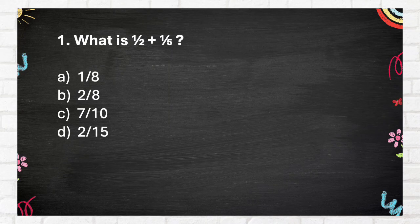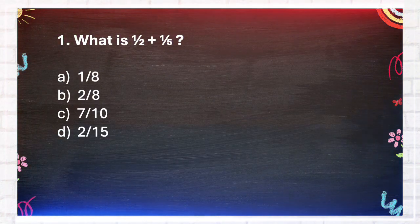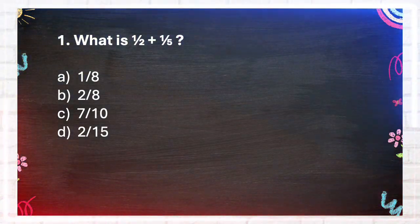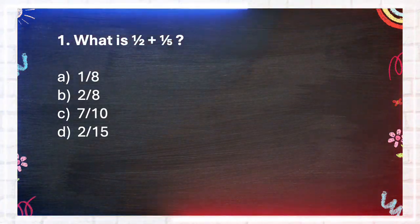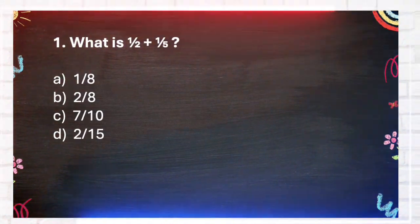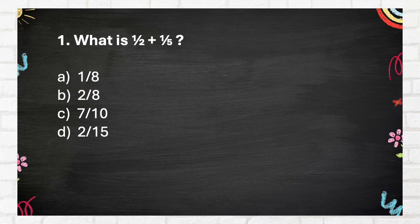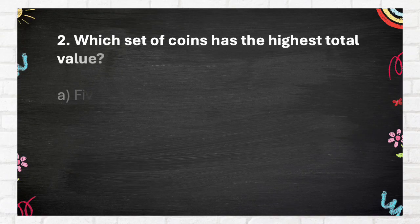Question number 1. What is 1 half plus 1 fifth? Again, what is 1 half plus 1 fifth? A. 1 eighth. B. 2 eighths. C. 7 tenths. D. 2 fifteenths. The answer is C. 7 tenths.